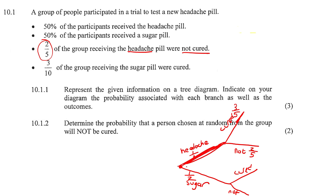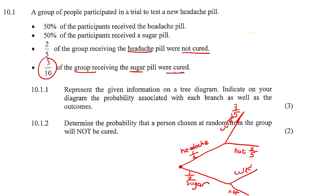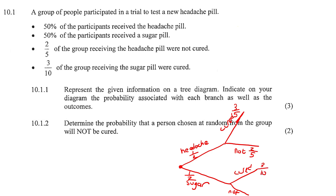This branch and this branch are also one unit, so if you add these two together, it will always add up to one. They tell us that three-tenths of the group receiving the sugar pill were cured, so that branch is going to be 3 over 10. That means this part here would have to be 7 over 10, because 3 over 10 and 7 over 10 is 1.